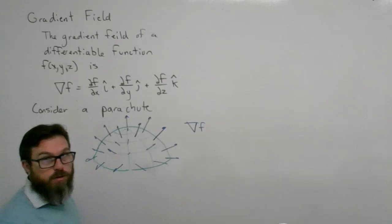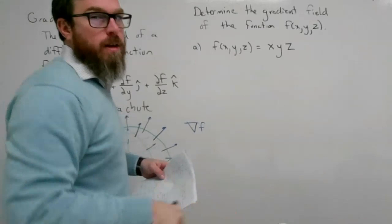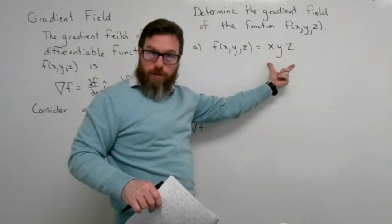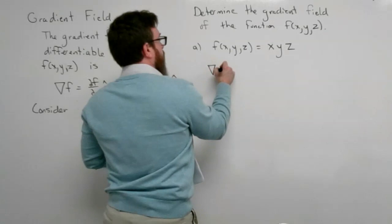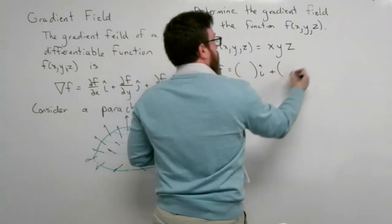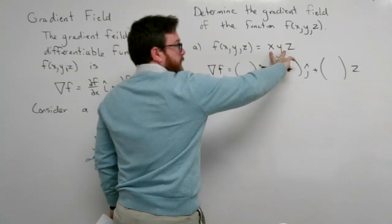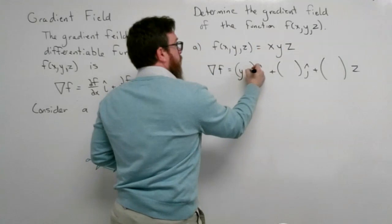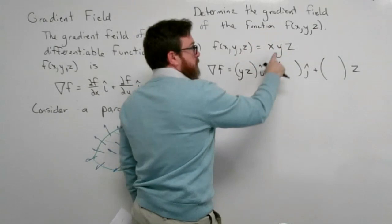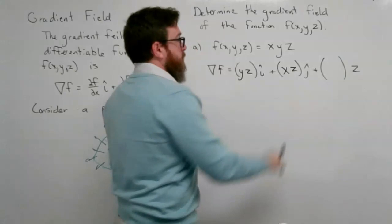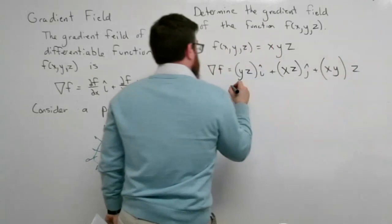Our job is to find the gradient of a function. For the first example, f(x, y, z) = xyz. The gradient of f is the partial derivative with respect to x times i, plus the partial with respect to y times j, plus the partial with respect to z times k. With y and z as constants, the partial with respect to x gives yz; with x and z as constants, the partial with respect to y gives xz; and with x and y as constants, the partial with respect to z gives xy. So the gradient is yzi + xzj + xyk.